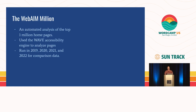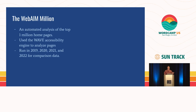These six most common errors come out of a study done by WebAIM, a nonprofit out of Utah that runs the WAVE Web Accessibility Evaluator Project. They did an automated analysis of the top million pages around the web — the million most frequently visited pages. They've done this four times now: in 2019, 2020, 2021, and 2022.